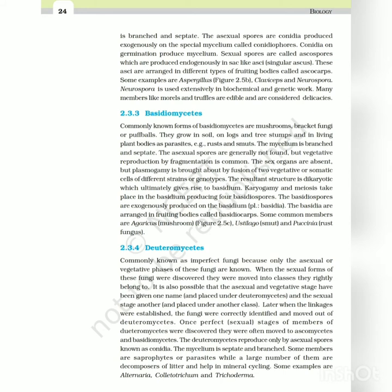Basidiomycetes - commonly known forms of basidiomycetes are mushrooms, bracket fungi or puffballs. They grow in soil, on logs and tree stumps, and in living plant bodies as parasites (e.g., rusts and smuts). The mycelium is branched and septate. The asexual spores are generally not found, but vegetative reproduction by fragmentation is common. The sex organs are absent, but plasmogamy is brought about by fusion of two vegetative or somatic cells of different strains or genotypes. The resultant structure is dikaryotic which ultimately gives rise to basidium. Karyogamy and meiosis take place in the basidium producing four basidiospores. The basidiospores are exogenously produced on the basidium (plural: basidia). The basidia are arranged in fruiting bodies called basidiocarps. Some common members are Agaricus (mushroom, Figure 2.5C), Ustilago (smut) and Puccinia (rust fungus).